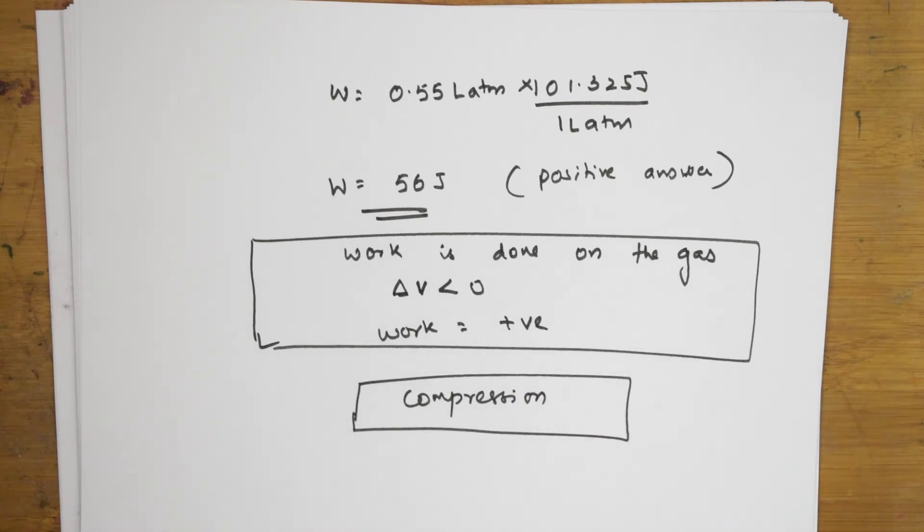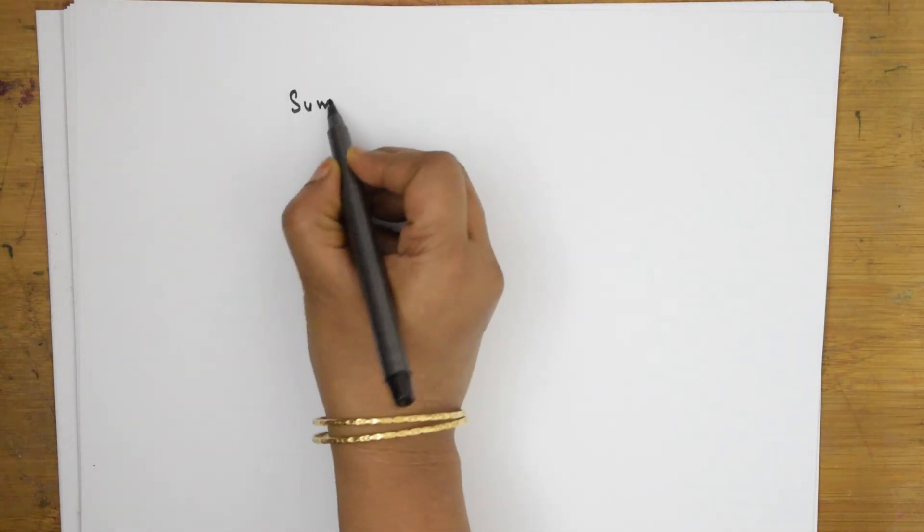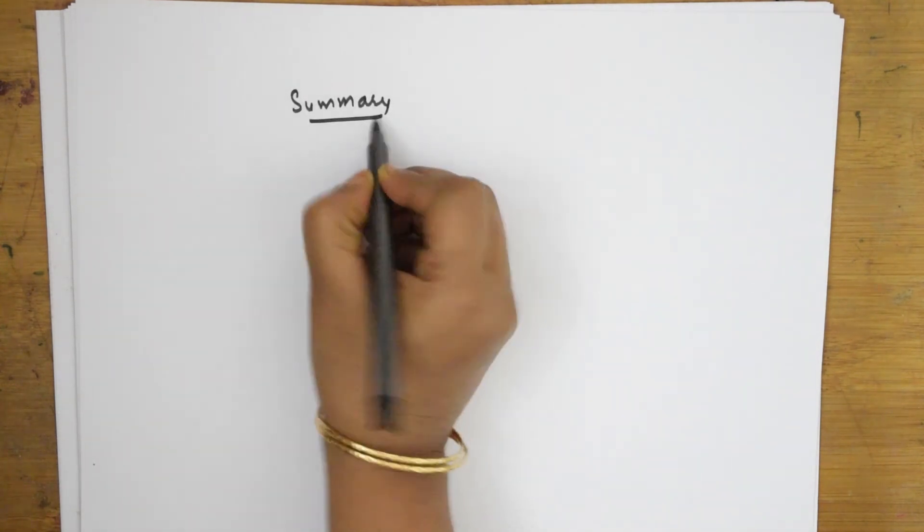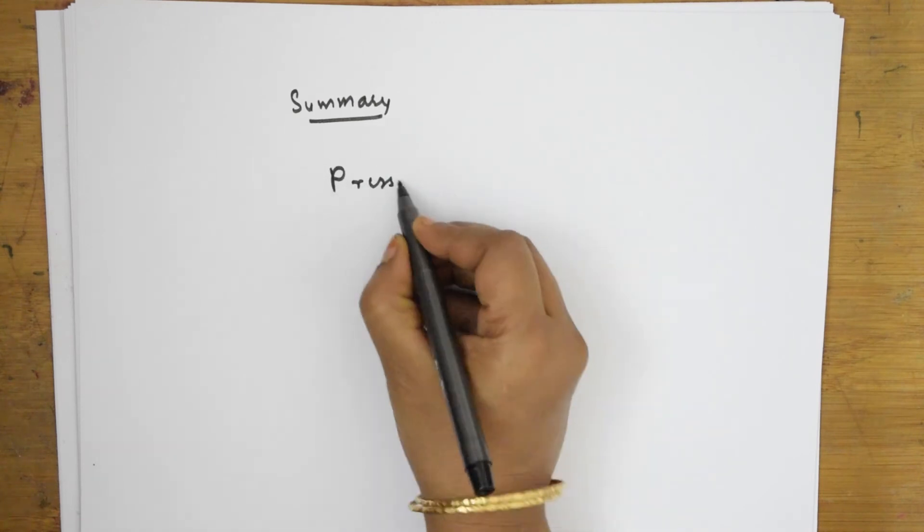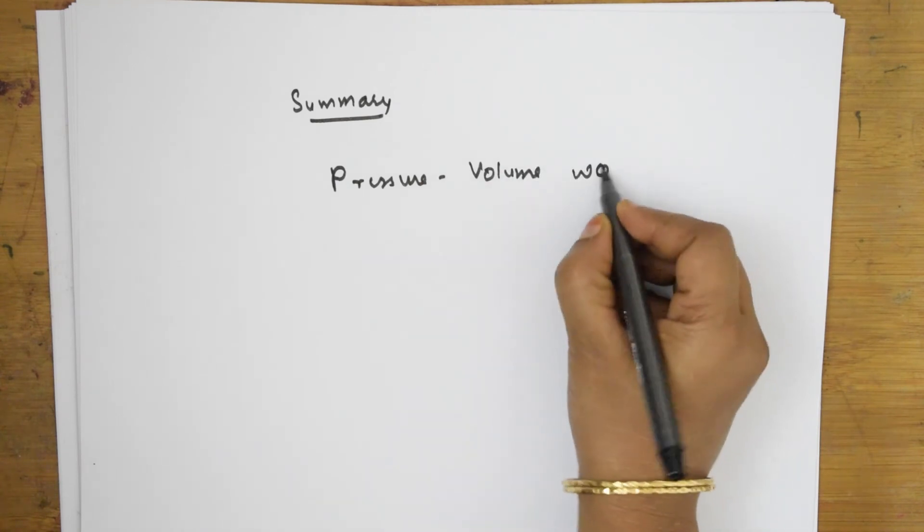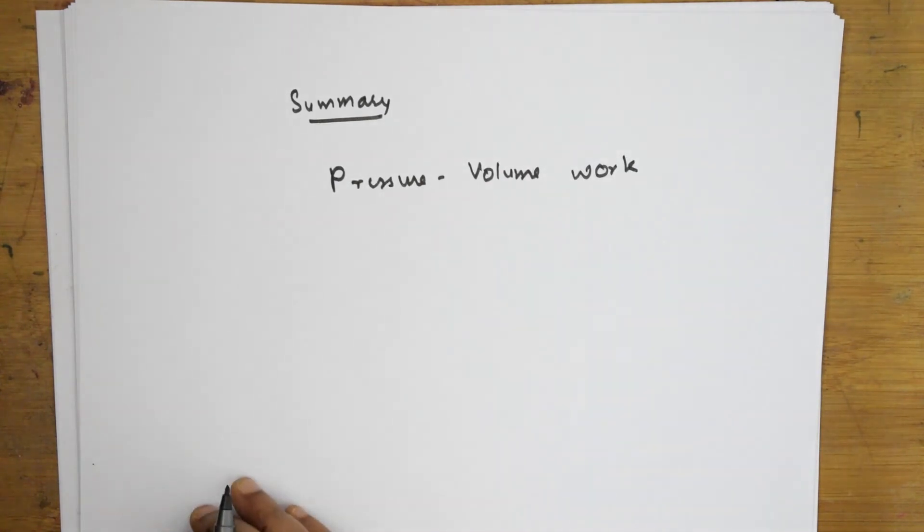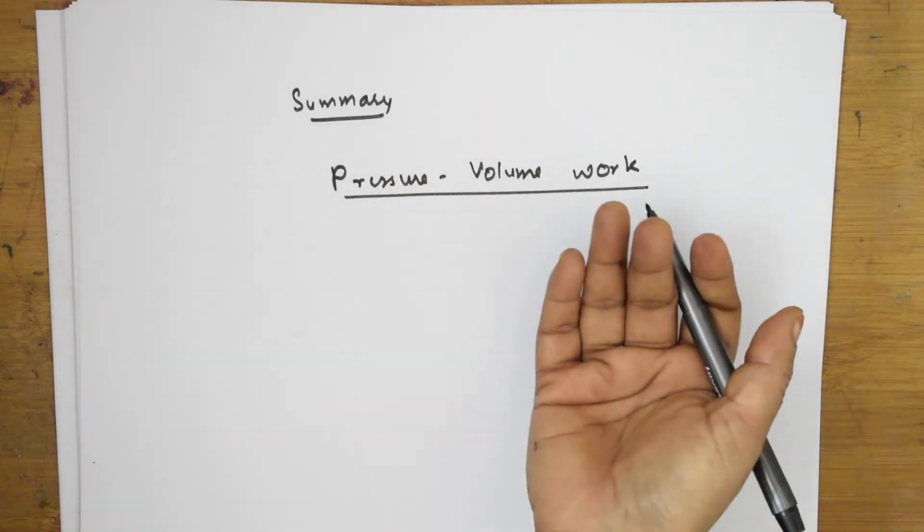So, let us summarize everything so that you will not forget. Let us see the PV work completely. Now, I am summarizing it. Summary. What is this? Pressure, volume, work. Correct? So, this is nothing but it can be expansion or compression also.